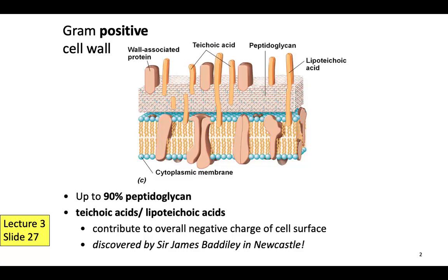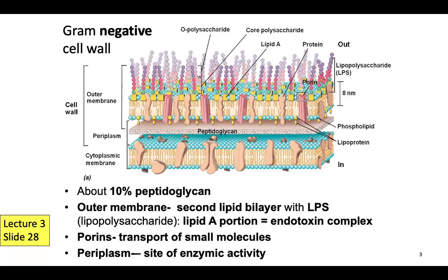Teichoic acid comes from peptidoglycan, and lipoteichoic acid comes from the cytoplasmic membrane. Let's move on to another type of cell wall. This slide shows you the cartoon of the cell wall of Gram-negative bacteria.